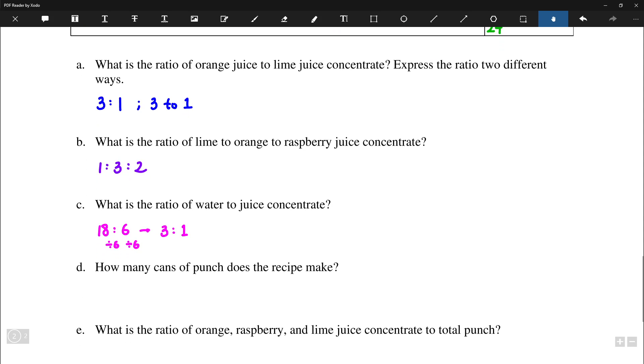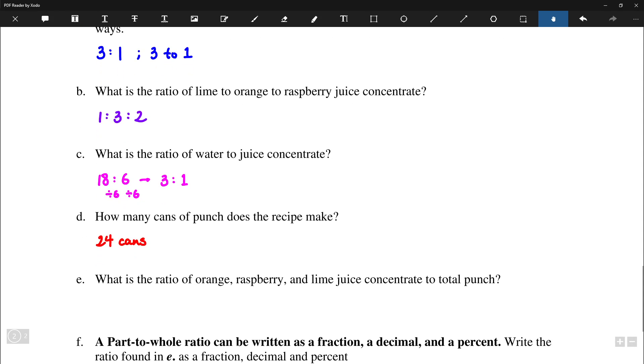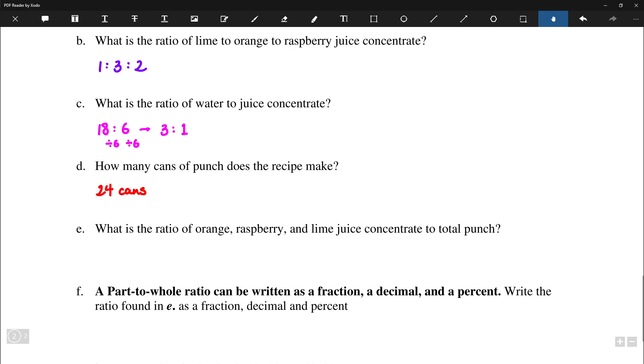From there, how many cans of punch does the recipe make? We already saw that the total was 24 cans. What is the ratio of orange raspberry and lime juice concentrate to total punch? So there were 6 cans of juice concentrate to 24 total punch. This can also be reduced to just 1 to 4.